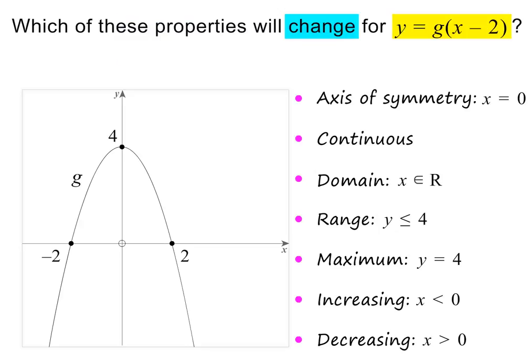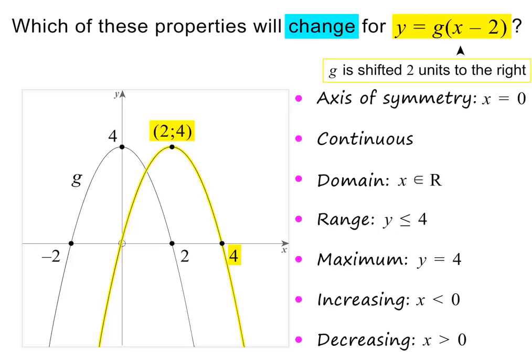Let's see which of these will change for y equals g of x minus 2. But first, what exactly are they asking us here? Whenever a constant is added or subtracted inside the function, it means that the graph must shift horizontally. In this case, it must shift two units to the right. In other words, what properties will change if the parabola lies in this position?